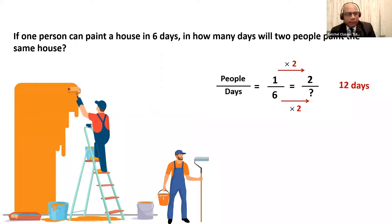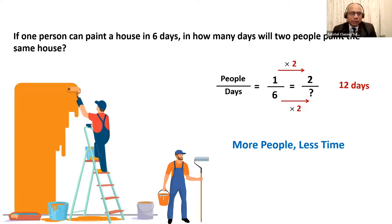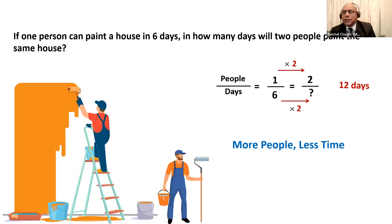If two people take more time, then I might as well hire one person. Why would I have two people paint the house in double the days? Not all quantities are in direct proportion. There are some quantities like these which are not in direct proportion, because if I increase the number of people, the time taken would be less. So our answer is clearly incorrect.